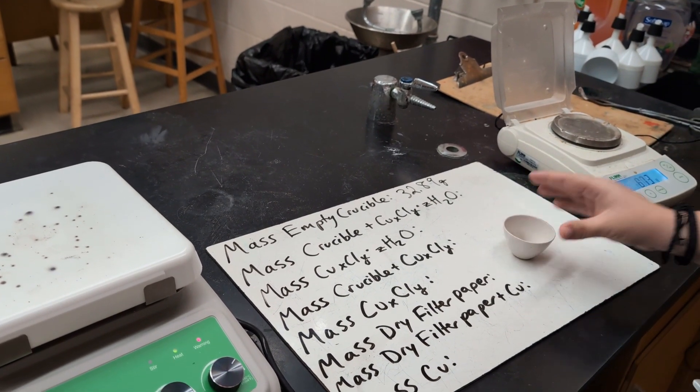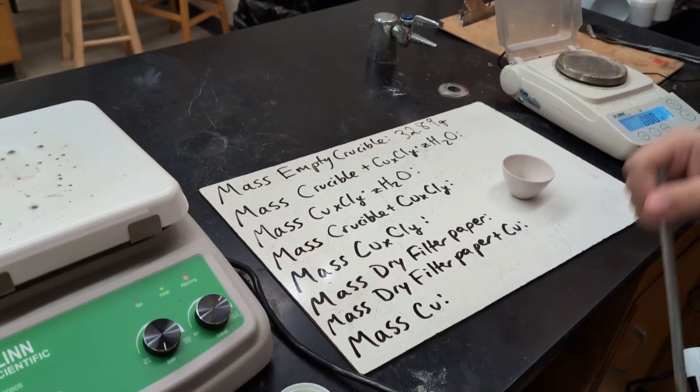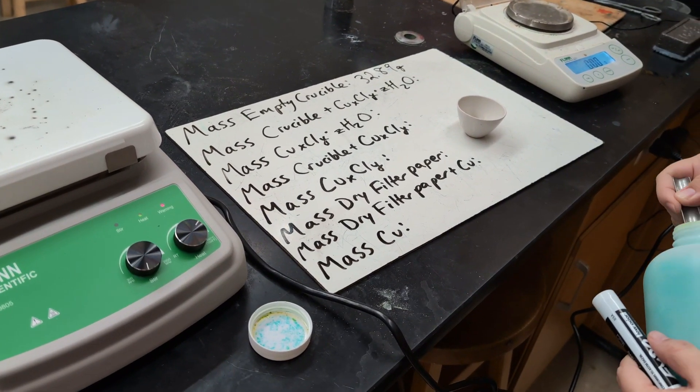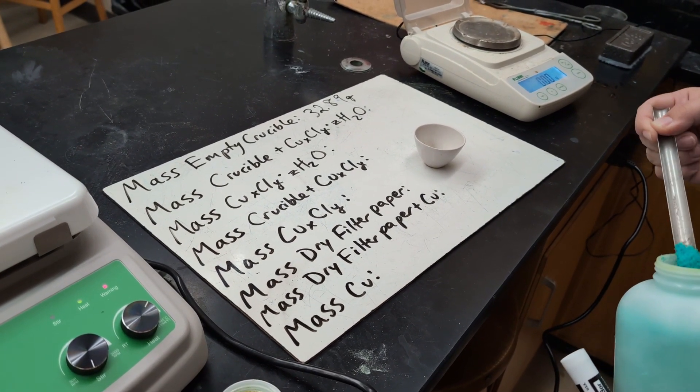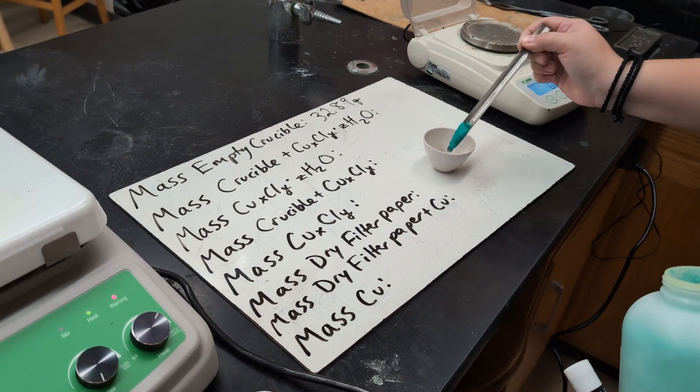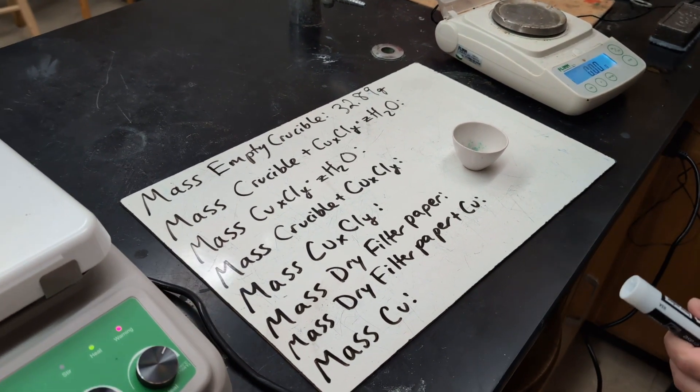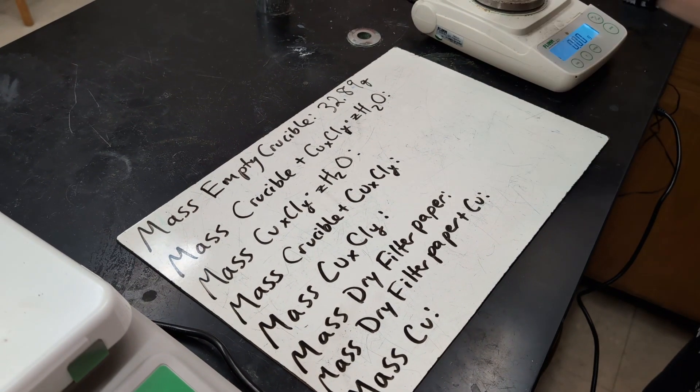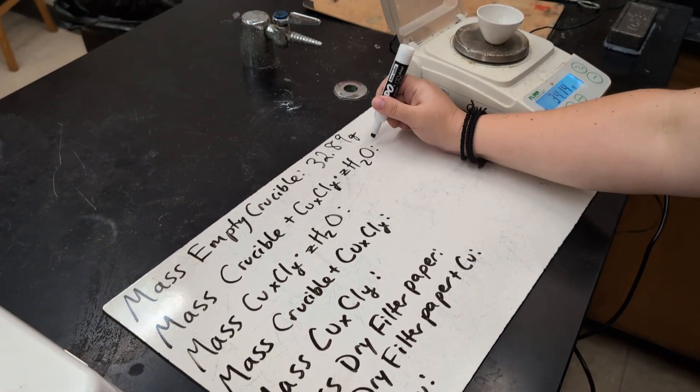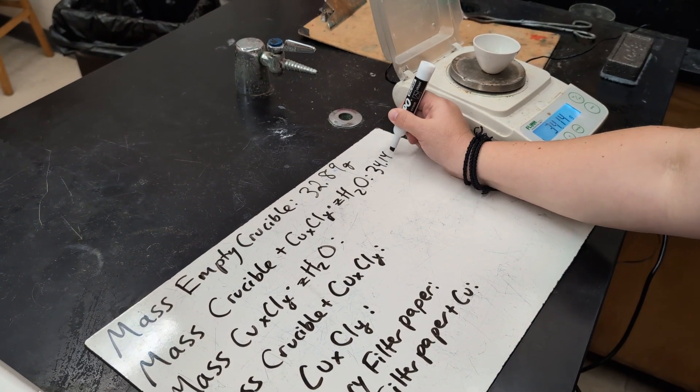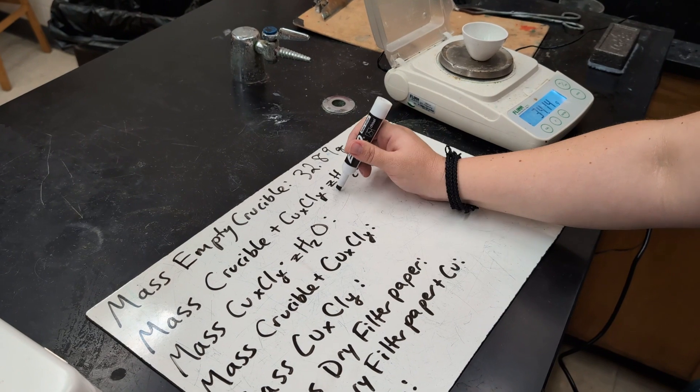And then I'm going to add a small amount of our hydrate. Now the copper chloride hydrate is this green or tealish color almost. And then we will record the mass again. And I have 34.14 grams of our hydrate. And again, it's a hydrate because it has that water present.